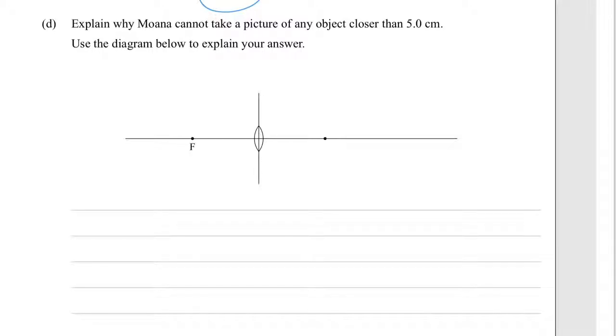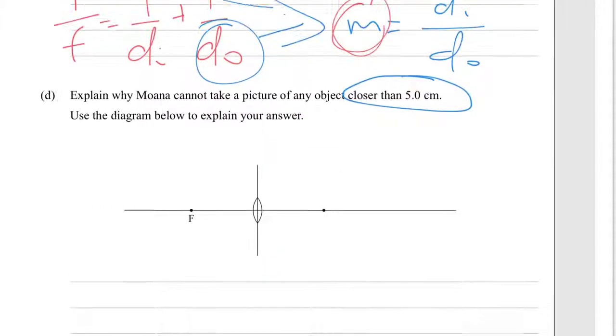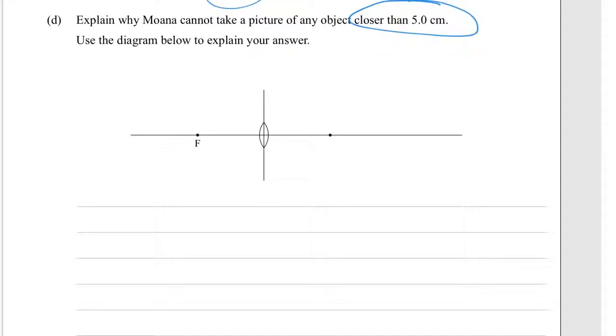Part D: Explain why Moana cannot take a picture of any object closer than 5.0 cm. Just got to cruise back up again, I think 5 cm is the focal length. So if f equals 5.0 cm. It says use the diagram below to explain your answer. If we put an object inside the focal length and we try and do a ray diagram of that.